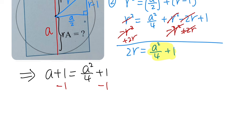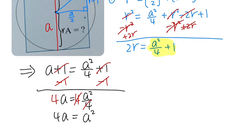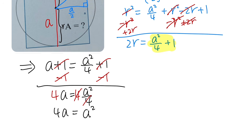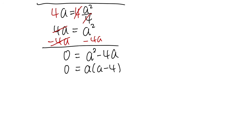Subtracting 1 from both sides gives a = a²/4. Multiplying both sides by 4: 4a = a². This is a quadratic, so subtracting 4a from both sides gives 0 = a² − 4a. Factoring out a: 0 = a(a − 4), so a = 0 or a − 4 = 0.